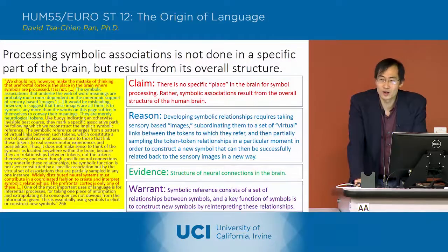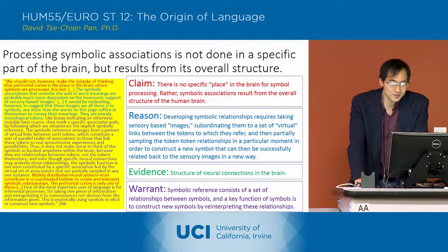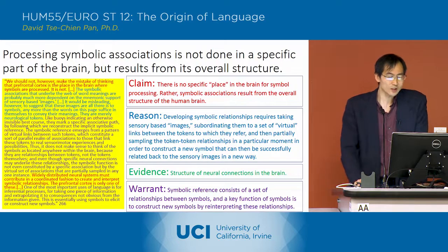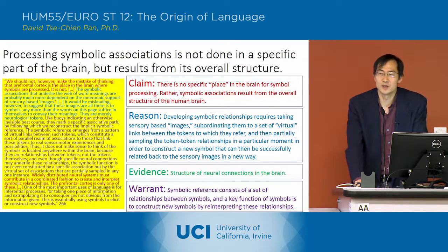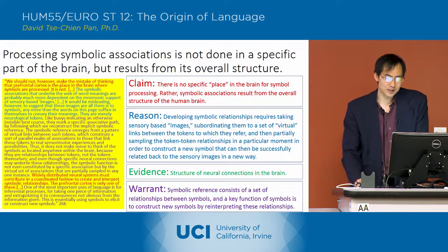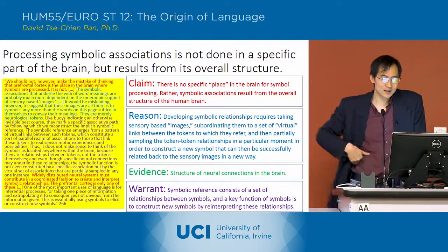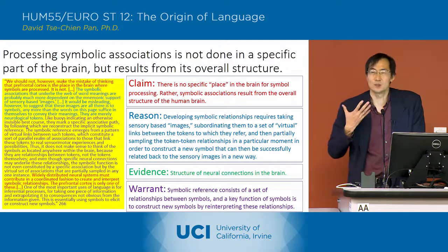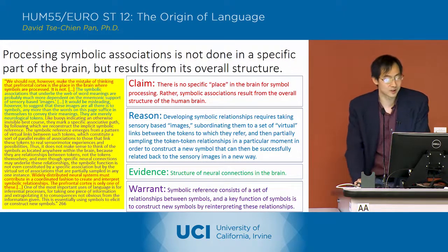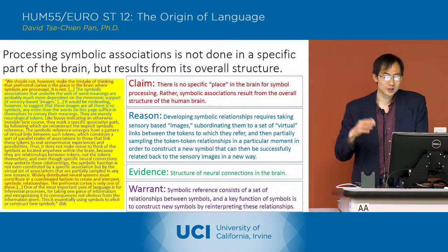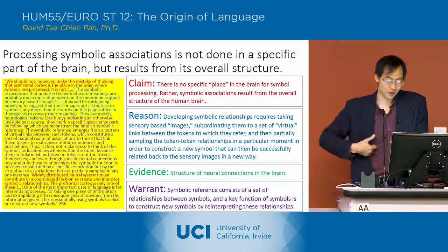The next part of the analysis of the brain talks about the way in which the brain links to language. The first thing indicated is that there's no specific place in the brain for symbol processing. Rather, symbol associations result from the overall structure of the brain.